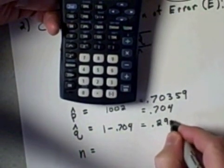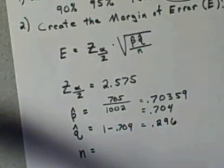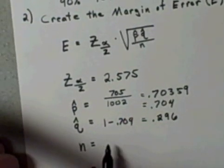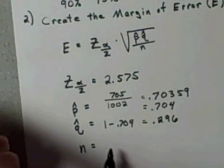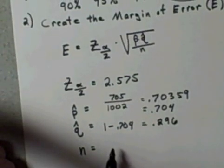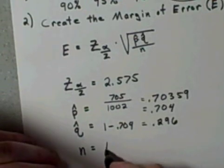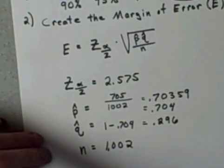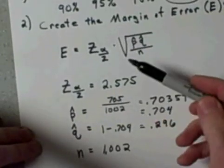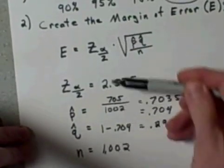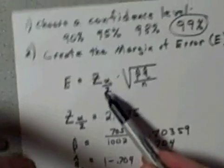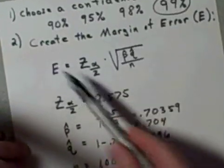n is simply the size of my sample overall. The sample size isn't 705, that's just the ones that said they did vote. The sample size is 1002. So we have the four values that we need to plug into this formula to find the margin of error.